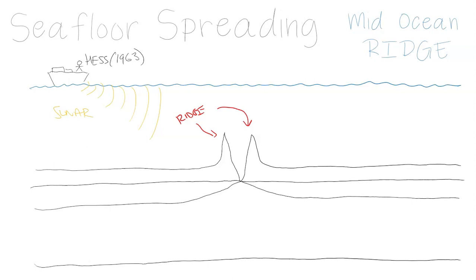We explain what Hess found in 1963 using sonar — the technology he used during the war for the US Navy — and how he used it as a professor at Princeton to look at the oceans, the ocean floor, and the terrain of the ocean floor. So here in the middle of the ocean we have the ridge.